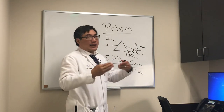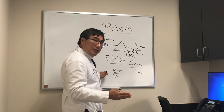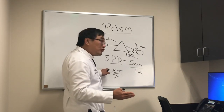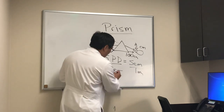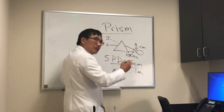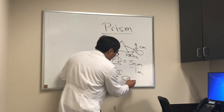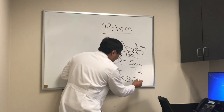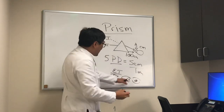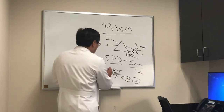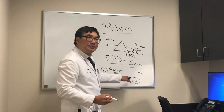When the eyes don't move anymore, we know that that particular power of prism was enough to neutralize the deviation. We then record this esotropia — eyes turned in — as, for example, 45 prism diopter esotropia.